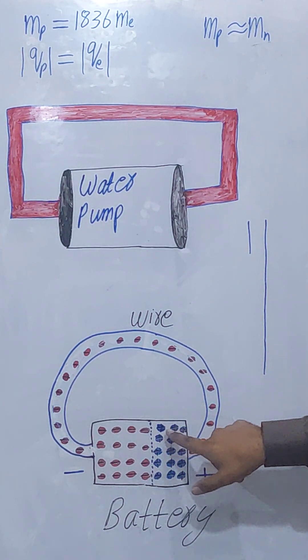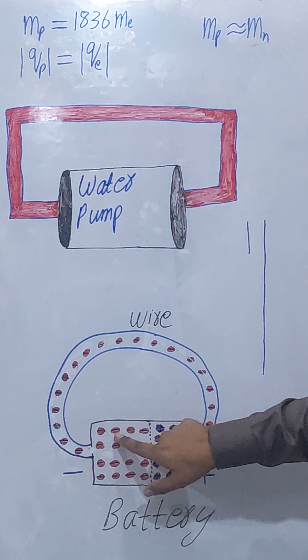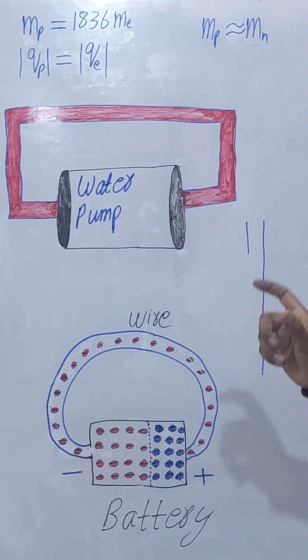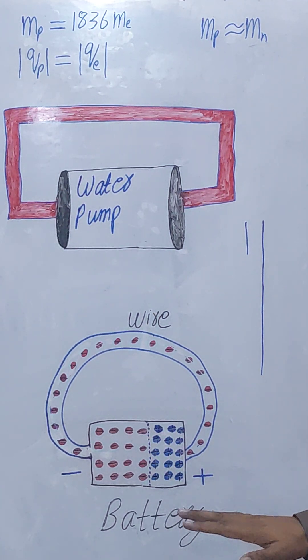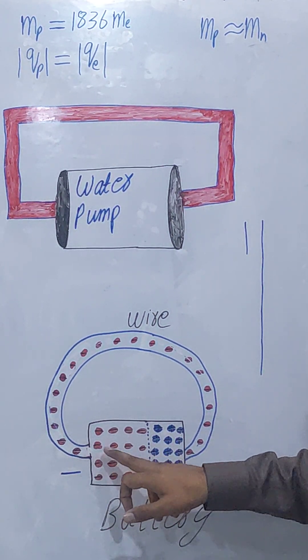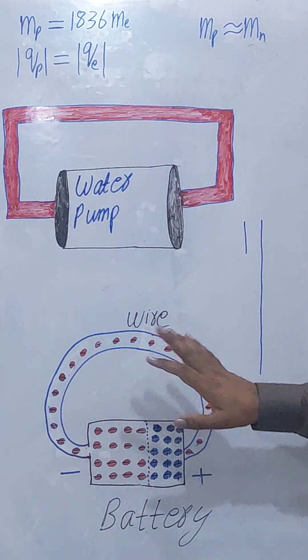The proton is too much bigger as compared to the electron, and the proton is bounded inside the nucleus. That is why protons can't move. Electrons actually move and flow through the wire. The flow of these electrons is current.